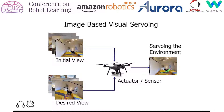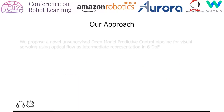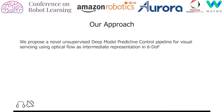Our framework consists of a deep network for optical flow predictions, which are used along with a predictive model to forecast future optical flow. We propose a novel unsupervised deep model predictive control pipeline for visual servoing using optical flow as an intermediate representation in 6 degrees of freedom.